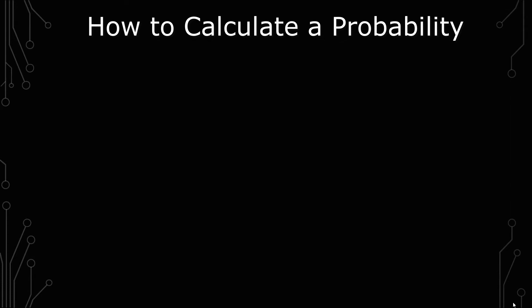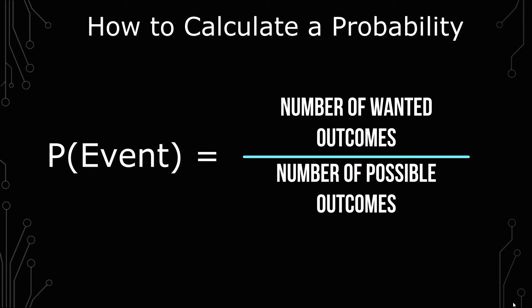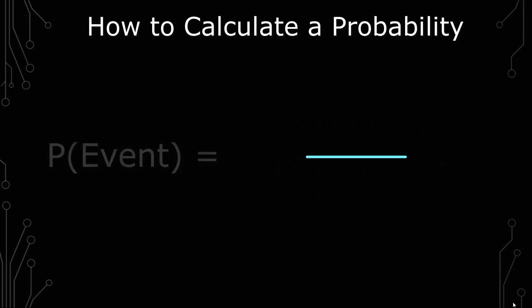So a probability formula is this. The number of wanted outcomes over the number of possible outcomes. And so I'm going to give you a very quick example to show what I mean by this.